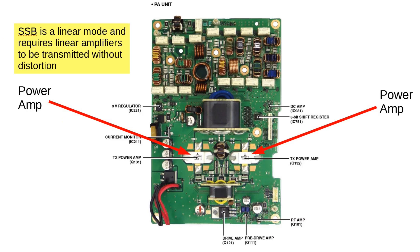The first thing to note is that single sideband is a linear mode and requires linear amplifiers. If the amplifier is not linear, you can get mixing products between the various frequency components in the speech waveform.